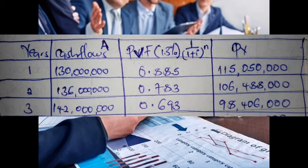For year three, cash flows are 142 million. Substituting into our formula, the present value interest factor is 0.693. The present value is 142 million × 0.693 = 98 million 406 thousand, which is the present value of 142 million three years from now.